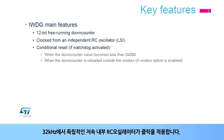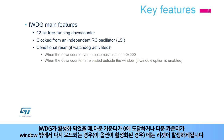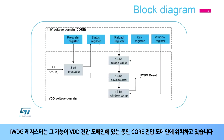It is clocked by an independent low-speed internal RC oscillator at 32 kHz. When the IWDG is activated, a reset is generated if the down-counter reaches zero, or when the down-counter is reloaded outside the window, if this option is enabled. The IWDG registers are located in the core voltage domain, while its functions are in the VDD voltage domain.